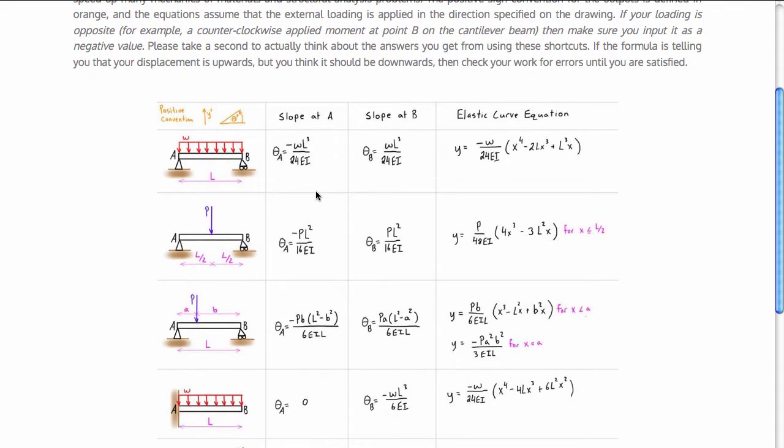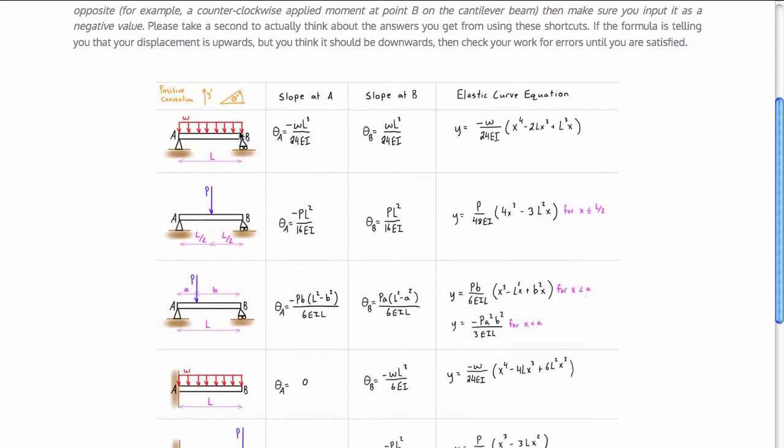Basically what we need to do is we need to identify the two types of loads that we have. We have a distributed load on the simply supported beam and we also have the point load that's not centered, also on a simply supported beam.